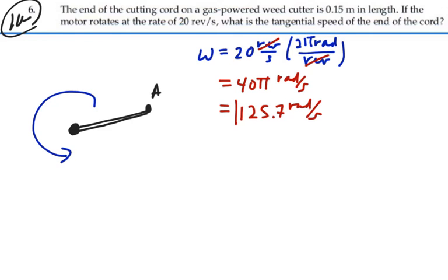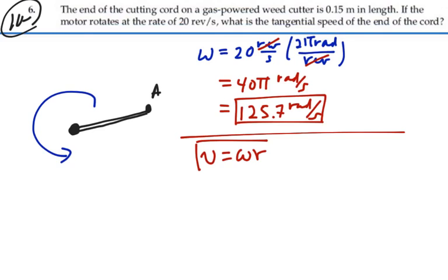So that is our angular speed for any point on this weed eater. If we want to find the linear speed at a particular point, that's equal to the angular speed times the radius to that point.